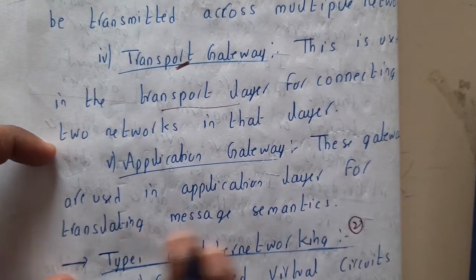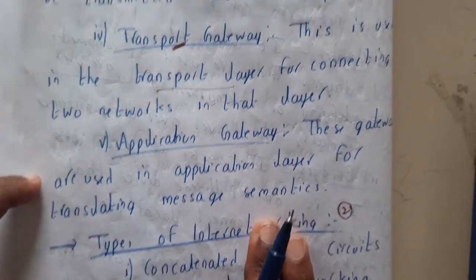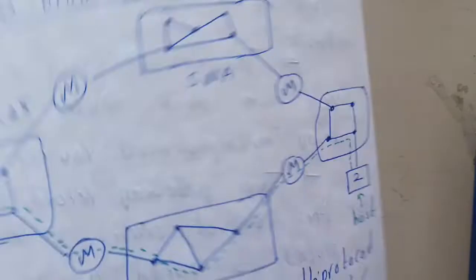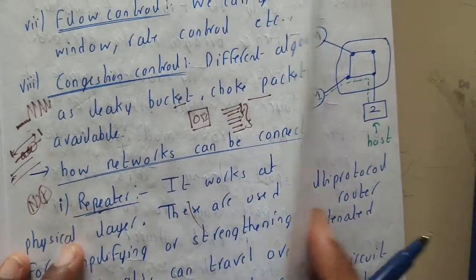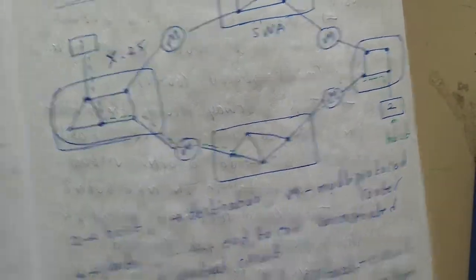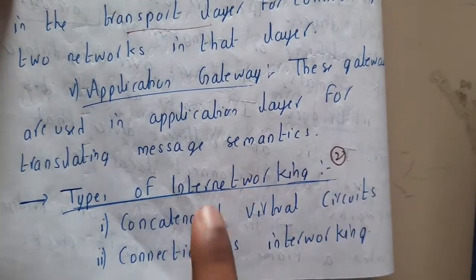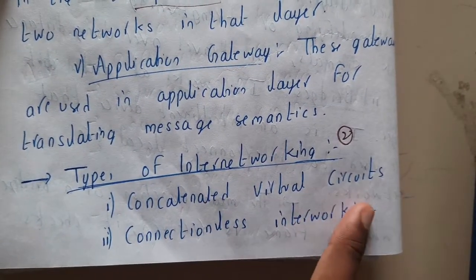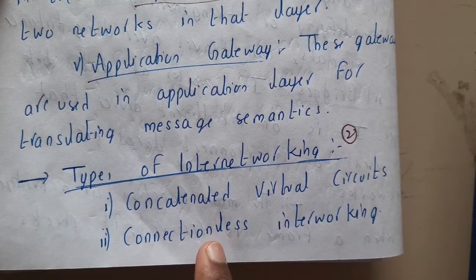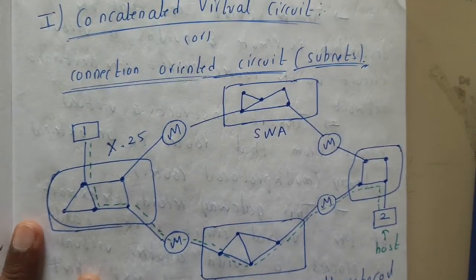I hope everyone got a basic idea about internetworking, the differences between networks, and how they are connected. In the next lecture we will go through two different types of internetworking: concatenated virtual circuits and connectionless internetworking. Thank you for watching.